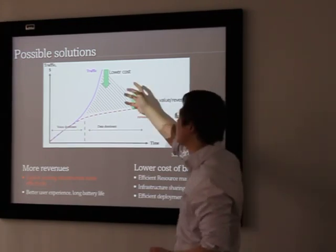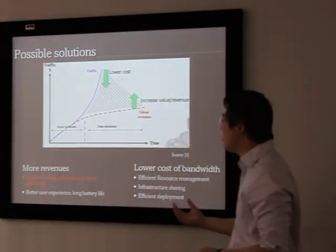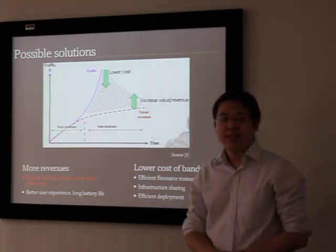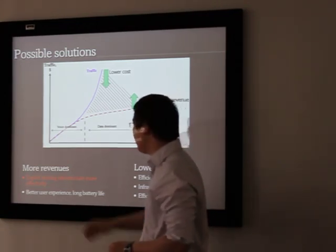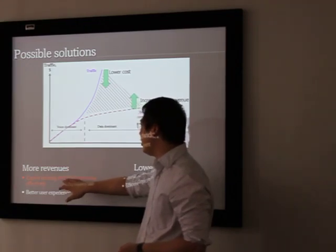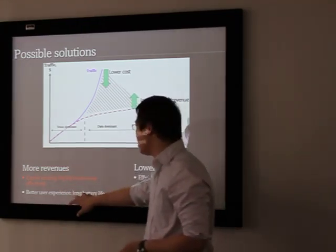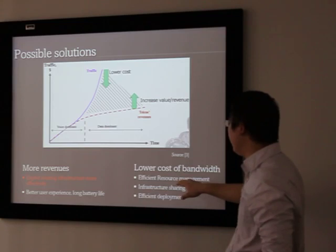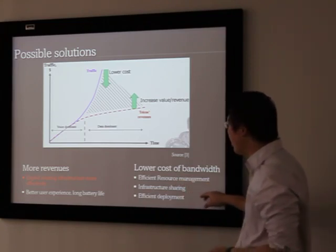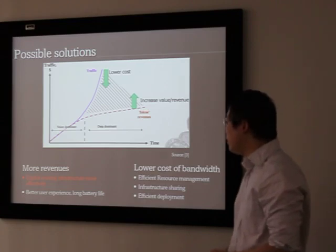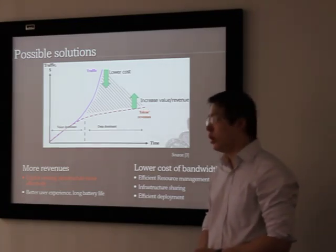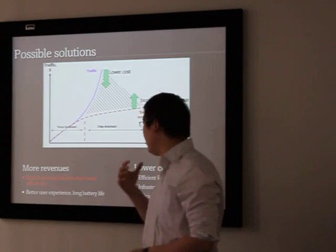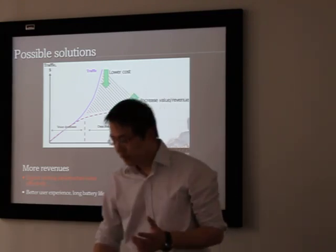And this is what was one of the operator's most important challenges. The solution could be we can try to lower the cost of the traffic and increase the value of the revenues. From one of the slides of James Zander, who is the director of this department, he proposed some solutions like for more revenues, we can explore existing infrastructure more efficiently, and better user experience, long battery life. By another side, we have lower cost of bandwidth through efficient resource management, infrastructure sharing, and efficient development. Due to the limitation of this master thesis, which is 20 weeks, I am going to focus on this part, which consists of exploring existing infrastructure more efficiently. Concretely, I am going to focus on video mobile phones.